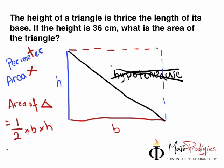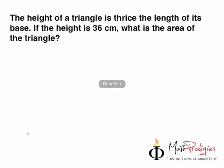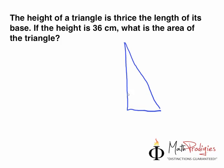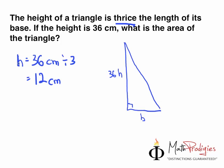Now that you know this, let's find the answer for this question. The height of the triangle is thrice the length of its base. So imagine a big triangle — the height is very tall, and the base is about one-third of it. If the height is 36 cm, that means the base equals 36 cm divided by 3, which equals 12 cm.